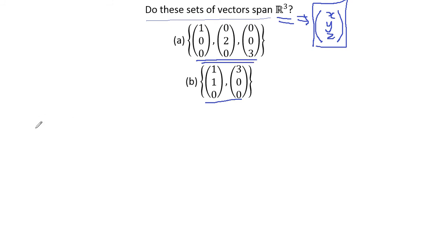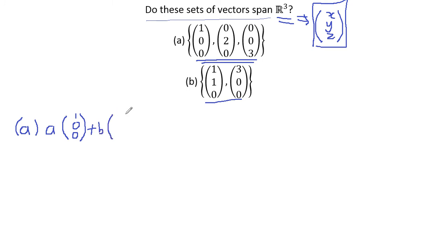Let's do it first for Part A, to see whether this set of vectors spans R3. We write the linear combination: A times (1, 0, 0) plus B times (0, 2, 0) plus C times (0, 0, 3). Here A, B, and C are just the scalar constants — the parameterization constants.